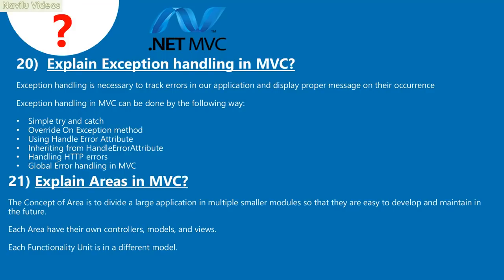Question 20: Explain exception handling in MVC. Exception handling is necessary to track errors in an application and display proper messages on their occurrence. Exception handling in MVC can be done by: simple try-and-catch, overriding the OnException method, using the HandleError attribute, inheriting from HandleError attribute, handling HTTP errors, and global error handling.